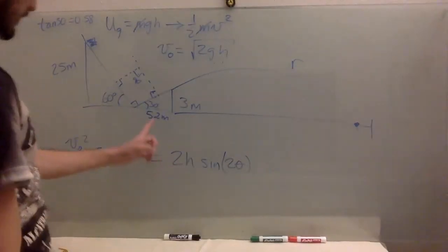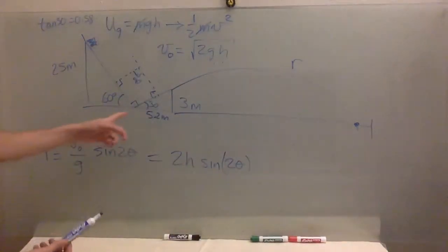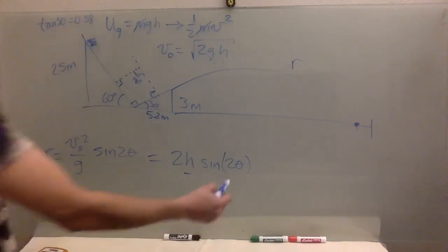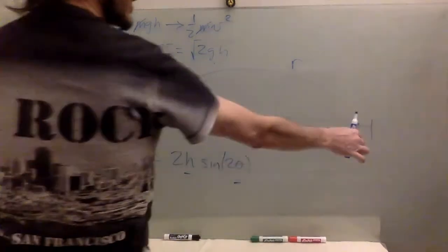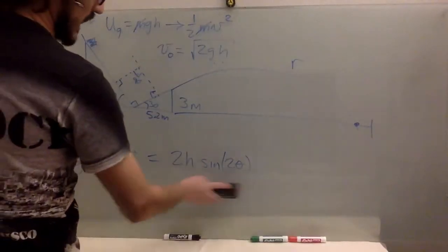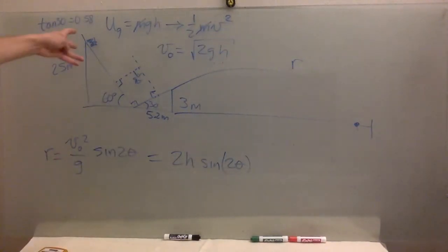So the range, this distance, you still have to subtract the 5.2. But this distance only depends on the height, which is the potential energy that you put in, and the angle, because the range depends on the angle. But it is independent of the mass. So it could be, you know, a thousand kilograms or ten grams. It will still be the same.